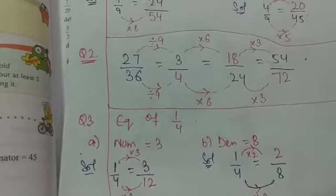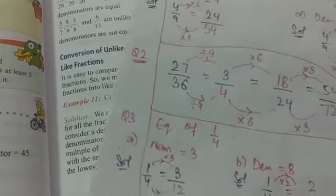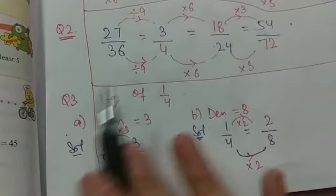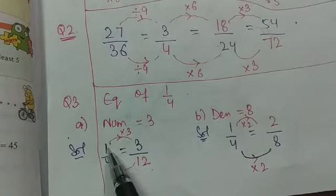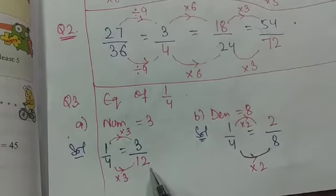Now the next question is equivalent of 1 by 4. That is having a numerator 3. It is same as question number 1. So it's 1 by 4 equals to 3 by blank. So it is 1 into 3 is 3. So 4 into 3 will be 12.